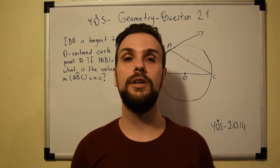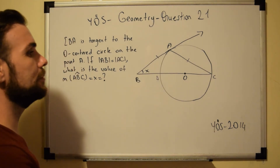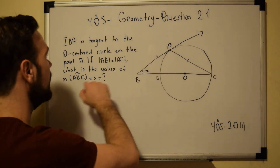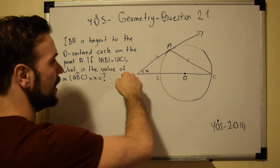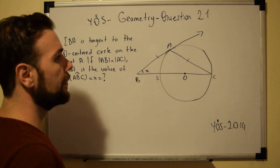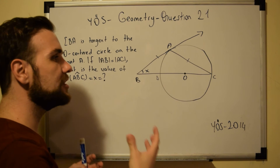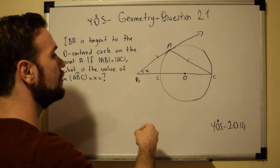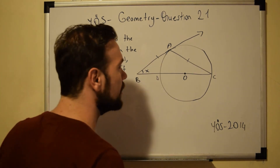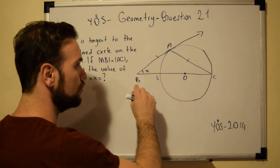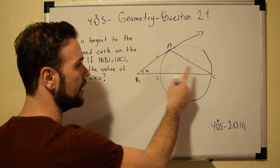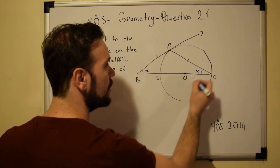Greetings everyone and welcome to question number 21. In this problem we are dealing with circles. BA is tangent to the circle centered at O at point A, and AB is equal to AC. We need to find the value of angle ABC, or X. Since these two sides are equal to each other, the two corresponding angles are also equal, so the value of this angle will also be equal to X.